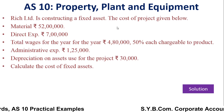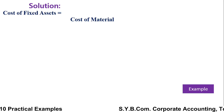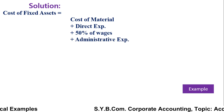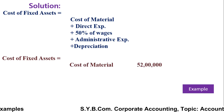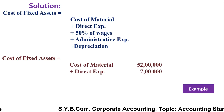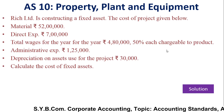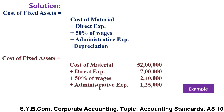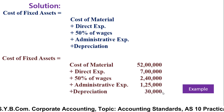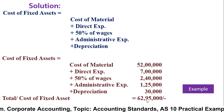To calculate the cost of the asset, you add all expenses made for the particular project. The cost of material is rupees 52 lakh, direct expenses rupees 7 lakh, 50 percent of wages — since total wages were rupees 4 lakh 80,000 and 50 percent is chargeable to this product — that is rupees 2 lakh 40,000, administrative expenses rupees 1 lakh 25,000, and depreciation rupees 30,000.